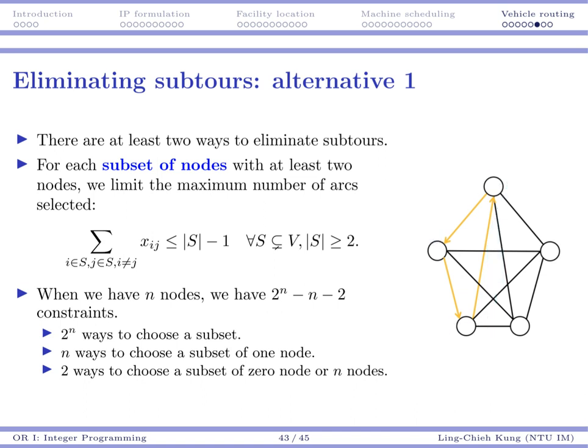So the thing is that if that's true for all the proper subsets, then this is going to eliminate subtours. Because if you say I give you four nodes, then you may select at most three among them. If I have ten nodes, you may select at most nine arcs in it. There's no way for you to form a cycle. So that's the idea of alternative one.